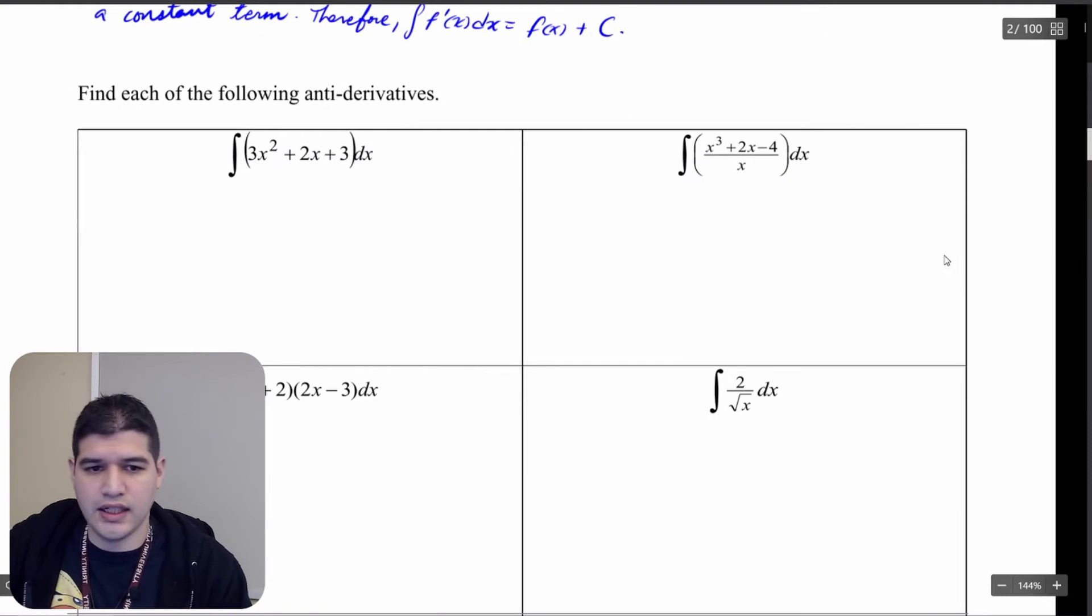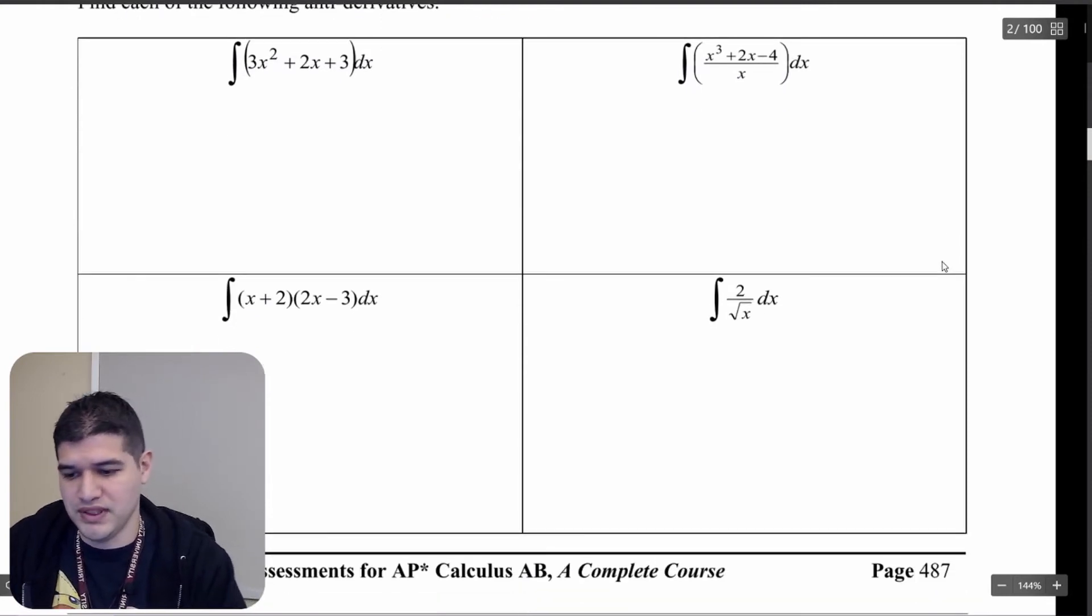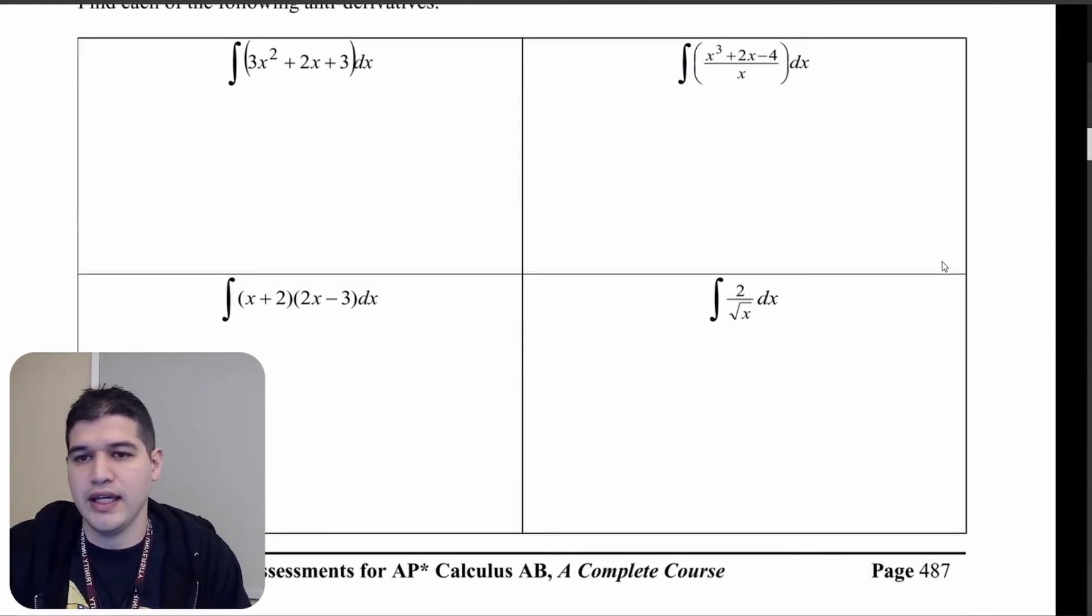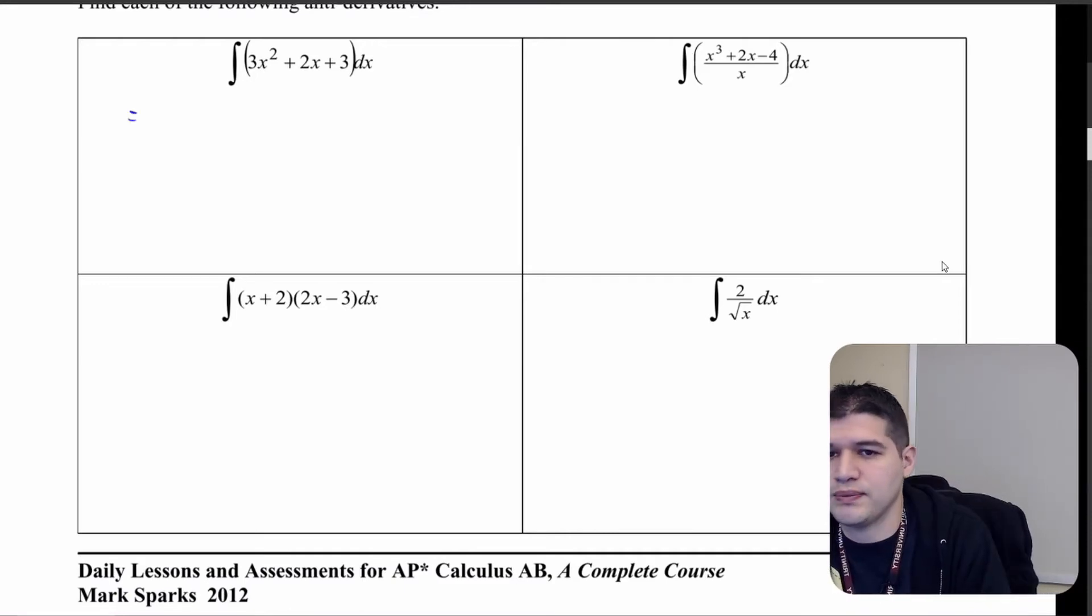Let's take a look at these problems. In our first problem we want to find that antiderivative of 3x squared plus 2x plus 3. I'm going to add 1 to the exponent, so 3x to the third, and divide it by that new exponent, so over 3.